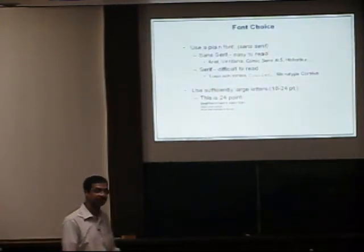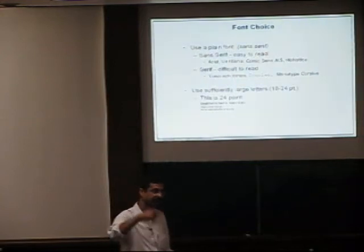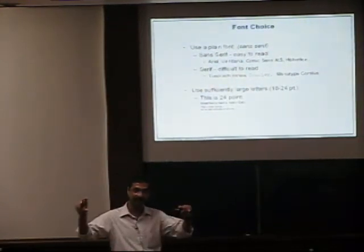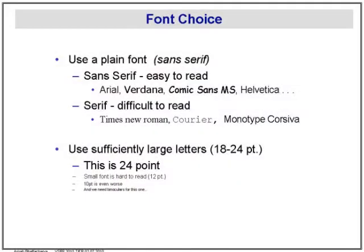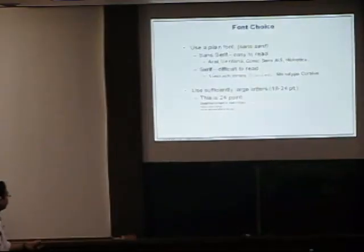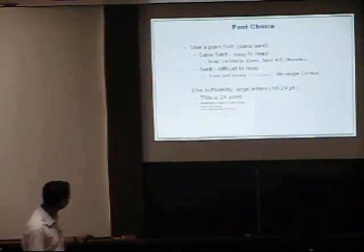If you remember the talk previously, the speaker started off with a very cloudy, ornate script title that was hard to read. Use sufficiently large letters — I would suggest something between 18 and 24 point. So that is 24 point. Small point gets a little hard to read — that's 10 point, and we need binoculars for this one.